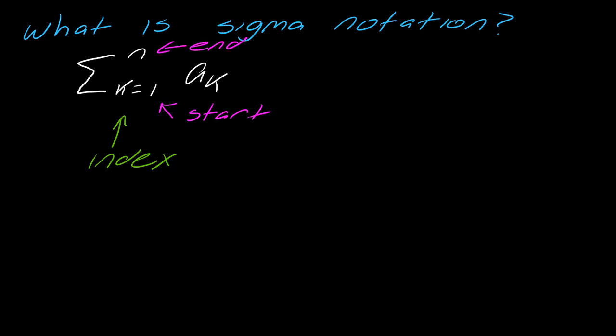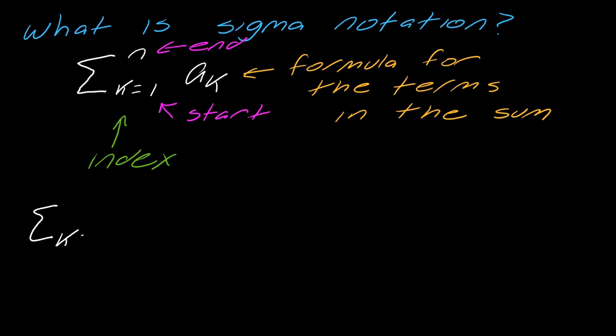Then finally, this part here is really a formula for the terms in the sum. So if I had something like k equals 1 to 3, you would figure out what the first term is, figure out what the second term is, figure out what the third term is. This is telling you where to start, where to stop, and then you would just sum up that many terms.